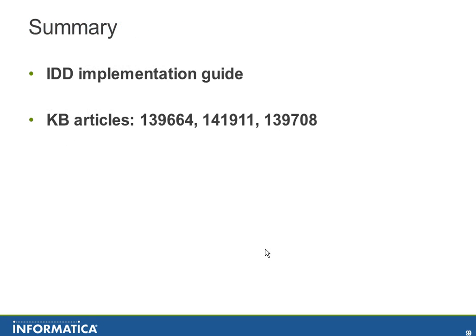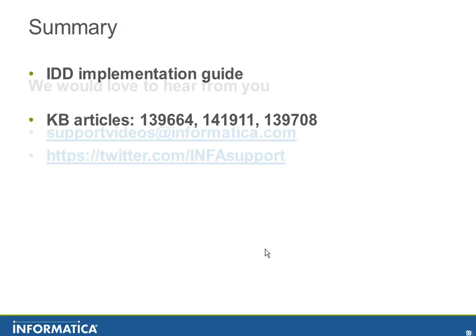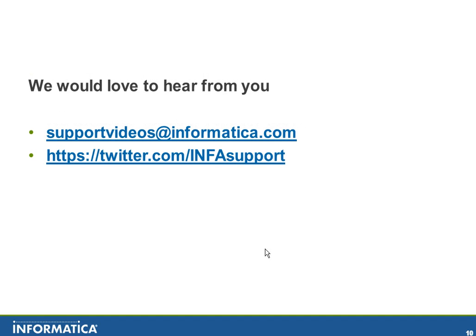These are additional KB articles you can refer to for much more information about data security. Basic configuration information can also be found in the IDD implementation guide. Hope you have at least got an idea of how to configure data security, why it is needed, and what the different characteristics are that need to be taken care of when enabling data security. We would like to hear your valuable feedback, which will help us create better videos. Thanks for your time watching this video.